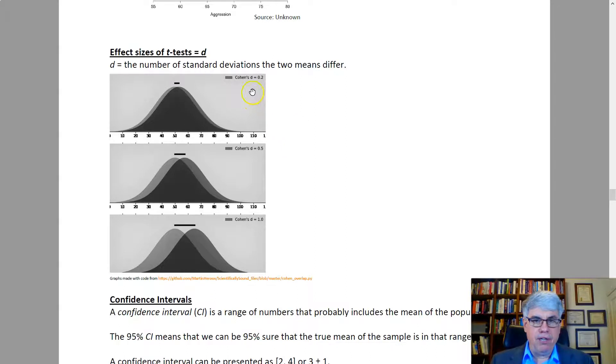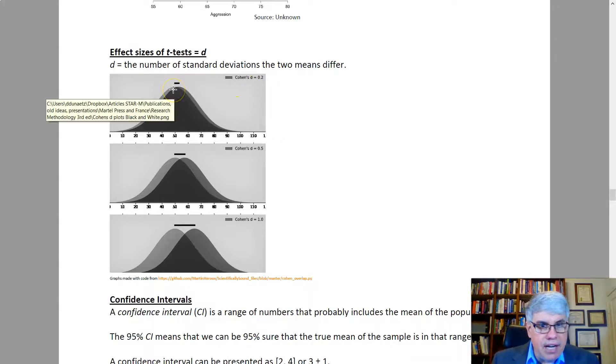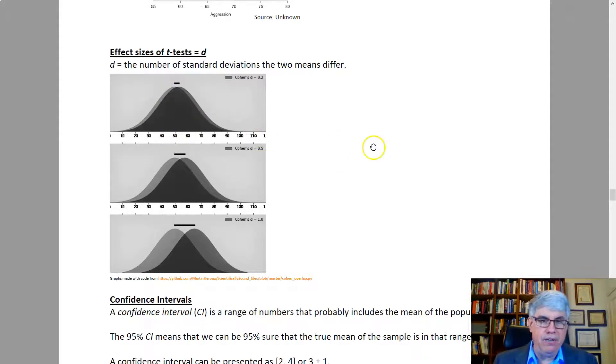A real small difference would be d equals 0.2, this first one. Here we've got an average of 48 and maybe 52 for the two groups. That's just a little difference between the groups.